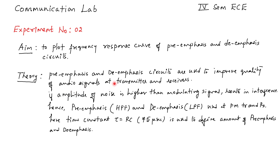These circuits are used to improve the quality of audio signals at the transmitter and receivers in FM circuits. If the amplitude of noise is higher than the modulating signal, it results in interference. Hence the pre-emphasis and de-emphasis circuits, which are high-pass and low-pass filters, are used at the FM transmitter and receiver. The time constant tau is usually selected to define the amount of pre-emphasis and de-emphasis required.